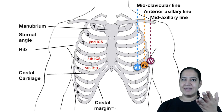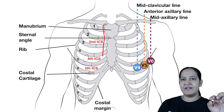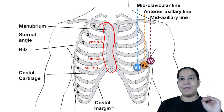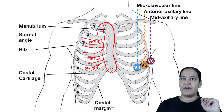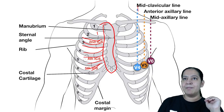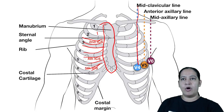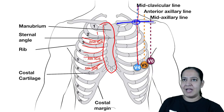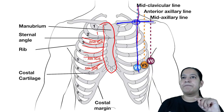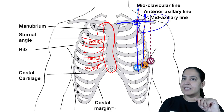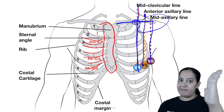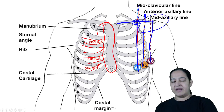For basic landmarks: the sternum is in the center, with ribs and intercostal spaces on either side. The first through fifth intercostal spaces are identified. Three important lines are used: the mid-clavicular line, the anterior axillary line, and the mid-axillary line. The mid-clavicular line passes through the midpoint of the clavicle, and the axillary lines run from the axilla.